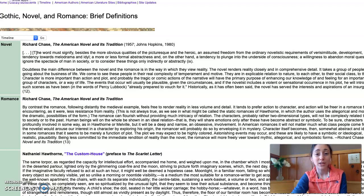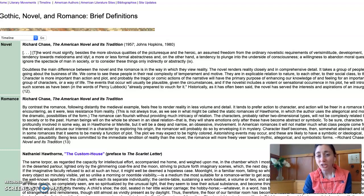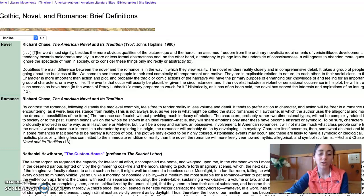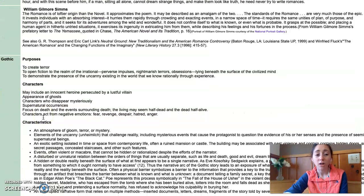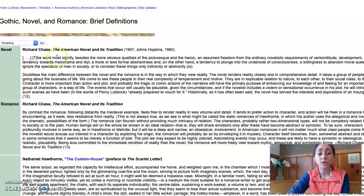Novelistic elements in My Ántonia include following a character all the way from the beginning of his life until middle age, with depth of growth and progression. Romance elements would include Jim's shallow relationships with Lena Lingard and Antonia — we don't know a lot from their perspective. Gothic elements include the scene where Antonia could have been easily raped if Jim hadn't been in her bed at the time — you'll need to read Book 2 to find that part — and also the suicide, unfortunately. So those are the three genres.